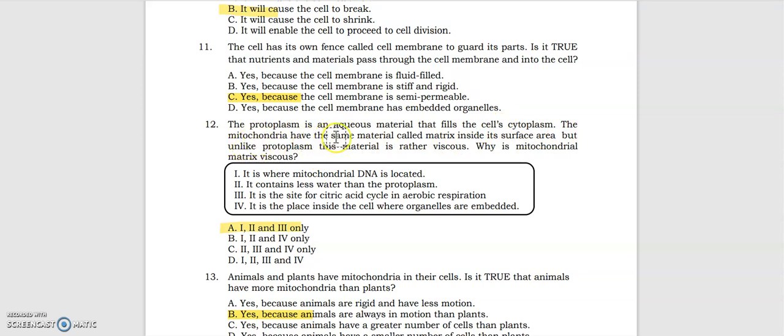Number twelve: The protoplasm is a nucleus material that fills the cell cytoplasm. The mitochondria have the same material called matrix inside its surface area, but unlike protoplasm this material is rather viscous. Why is mitochondrial matrix viscous? The answer is one, two, and three: It is where mitochondrial DNA is located. It contains less water than the protoplasm. And it is the site for citric acid cycle in aerobic respiration.